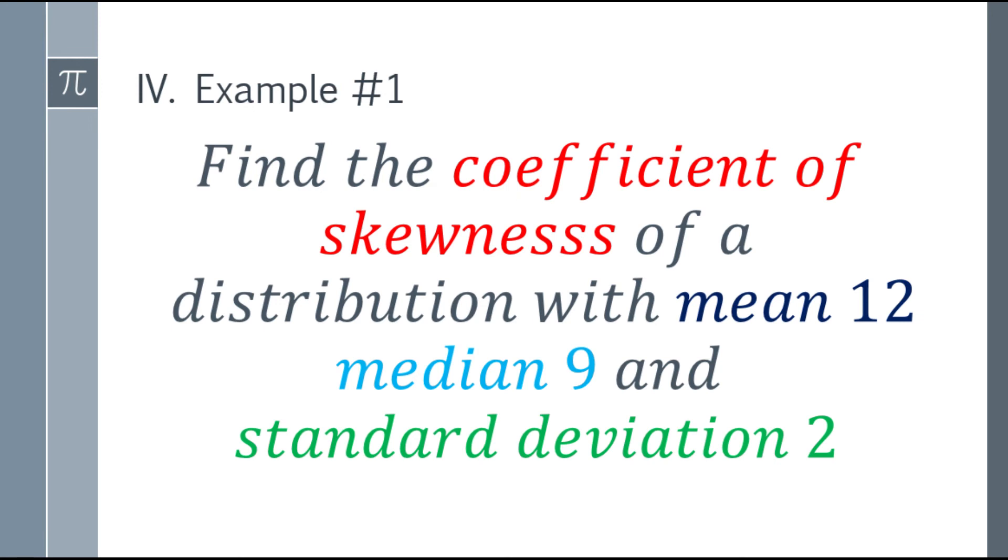So let's have the first example. Find the coefficient of skewness of a distribution with mean 12, median 9, and standard deviation 2.